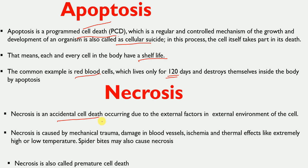Necrosis, on the other hand, is an accidental death — it is not programmed cell death. It occurs due to external factors in the environment of the cell. These external factors can include trauma, damage to blood vessels, ischemia, thermal effects such as high or low temperature, or spider bites. Necrosis is also called premature cell death, and it can be caused by external factors such as viruses, bacteria, or mechanical trauma.